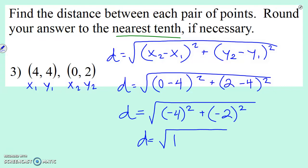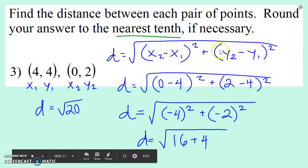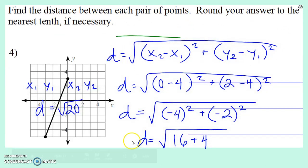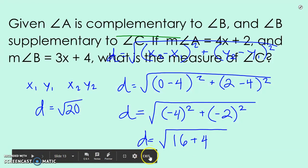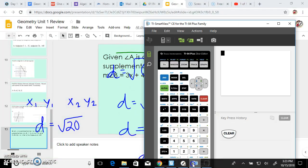Negative 4 squared is a positive 16. Negative 2 squared is a positive 4. So we're really looking at the square root of 20. But they want us to write our answer rounded to the nearest tenth. I don't have the square root of 20 memorized, so I'm going to actually need to pull up my calculator. If I can find my mouse. There it is. Let's go back. All right, so we're looking at the square root of 20.